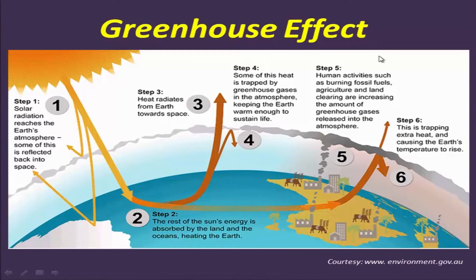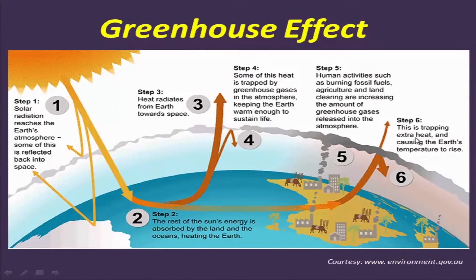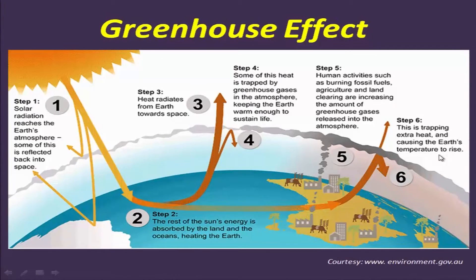The natural greenhouse effect up to a certain point is good because it sustains life. However, anthropogenic activity is increasing the temperatures of the earth, which will result in the melting of ice caps and other consequences.